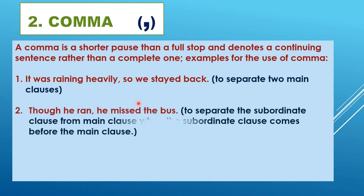In the next example, there are two parts of a sentence. If I had written 'he missed the bus though he ran,' I would not need a comma. But here, 'though he ran' comes first as the subordinate or dependent clause, so we put a comma: 'though he ran, he missed the bus.' If it were the other way around — 'he missed the bus though he ran' — you need not put a comma.